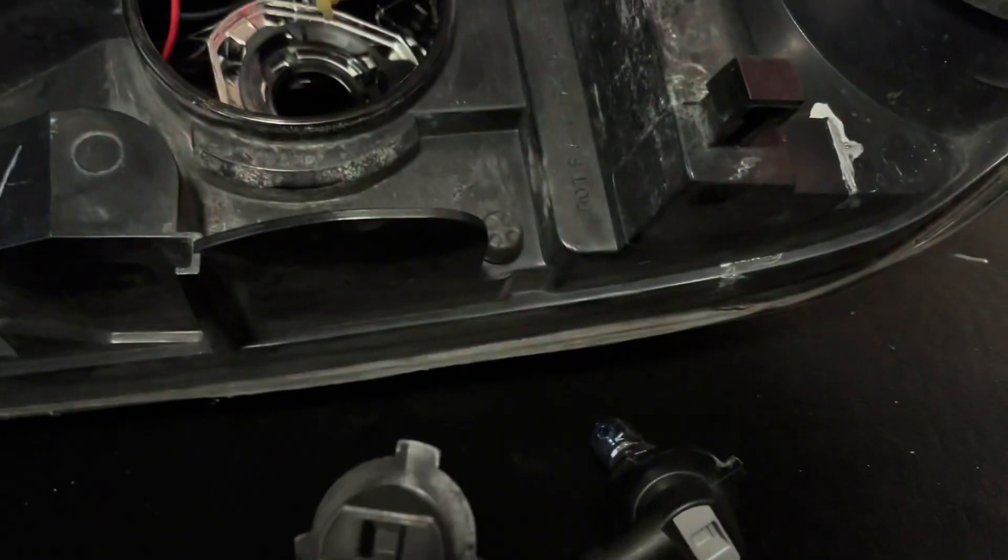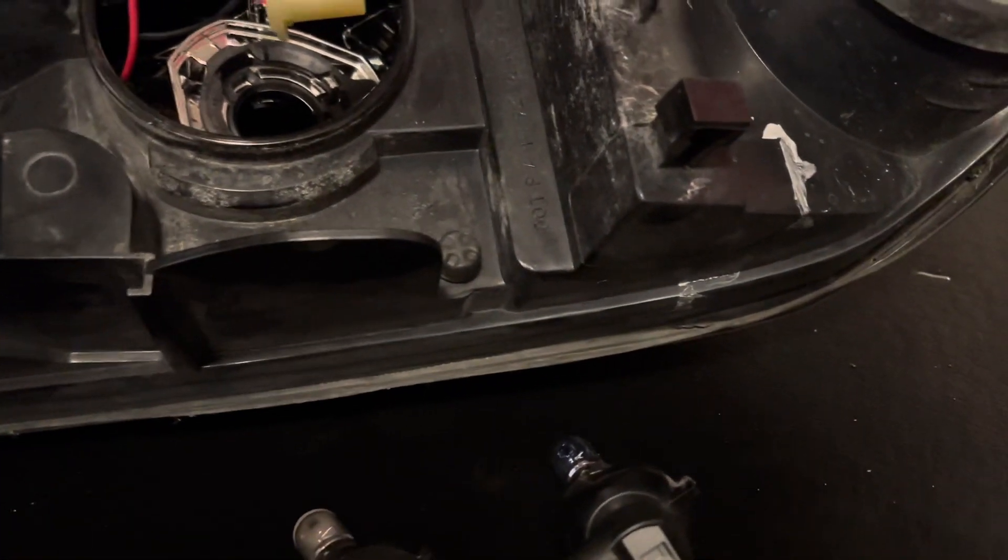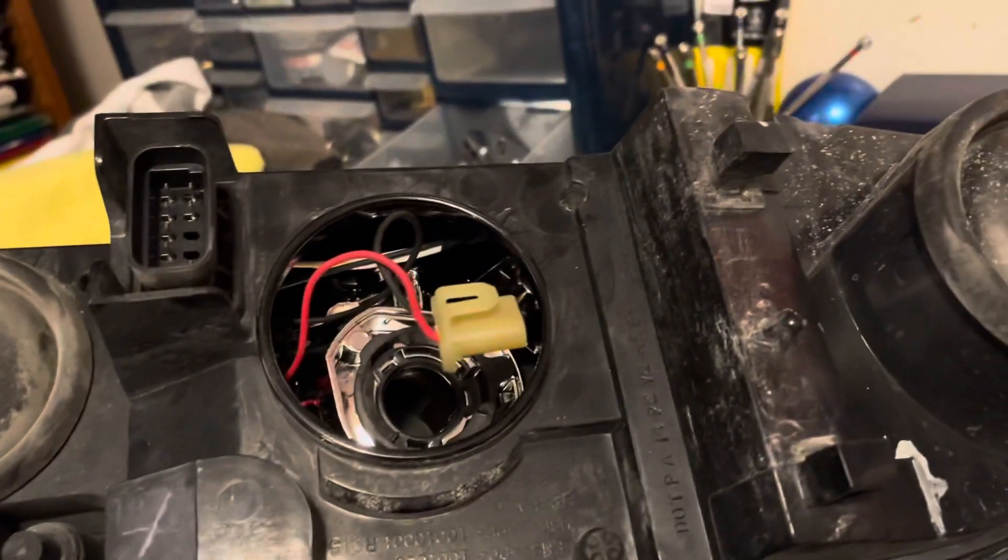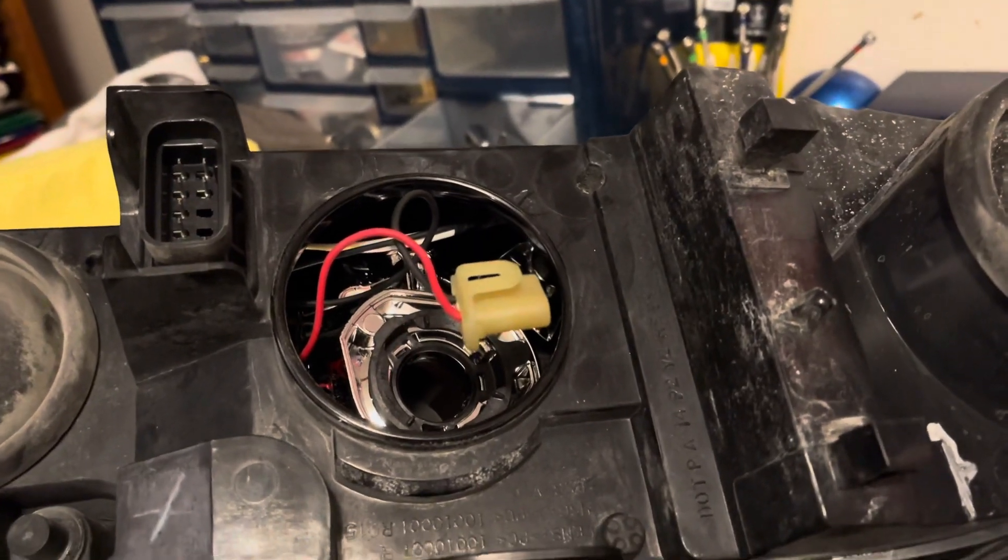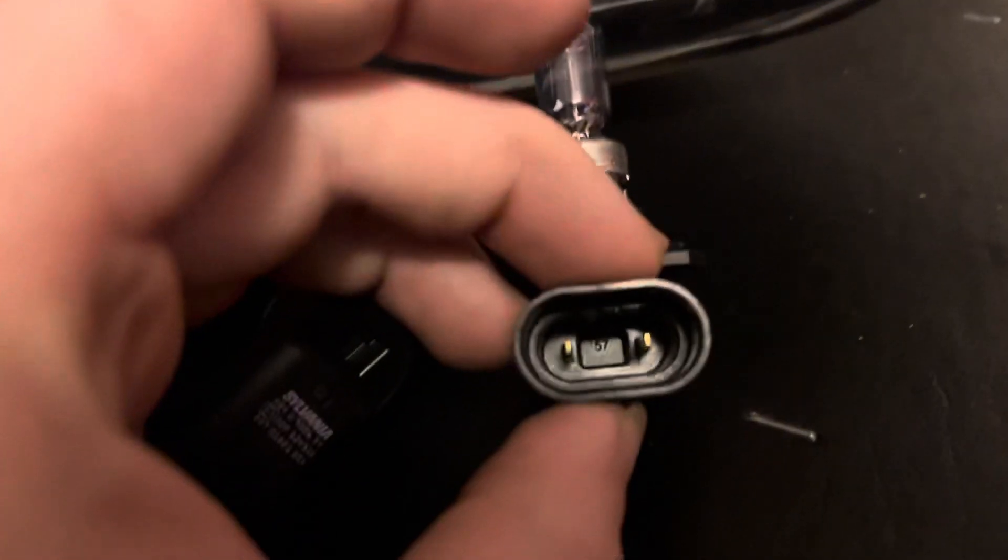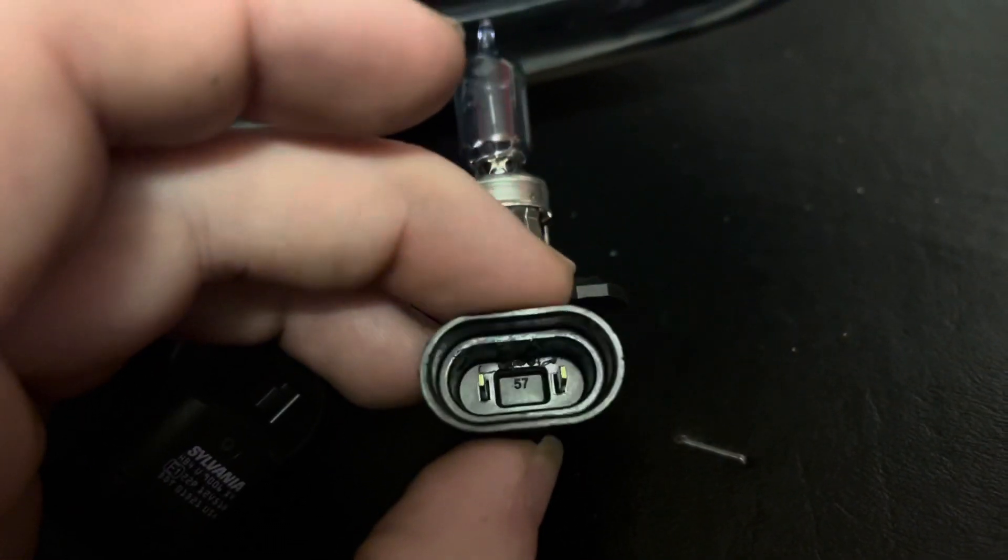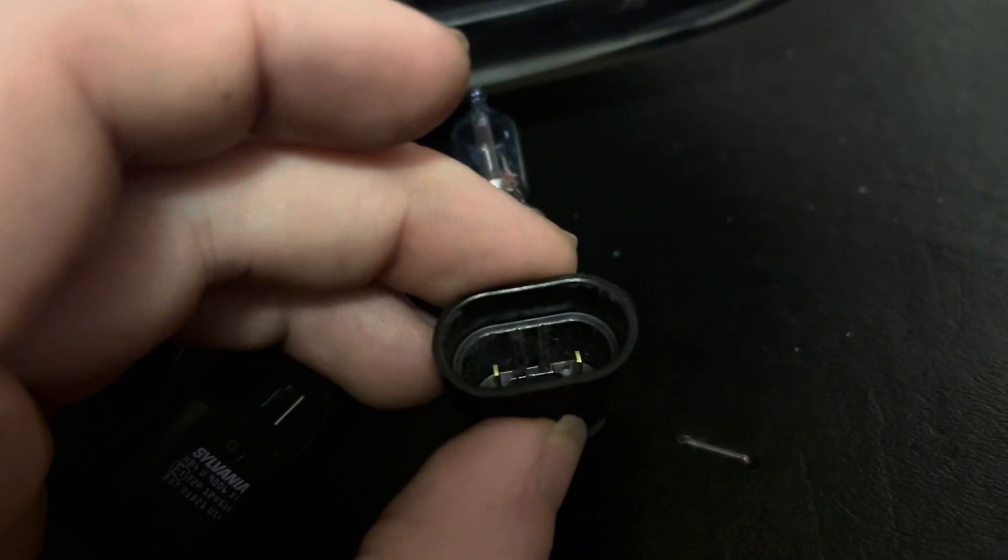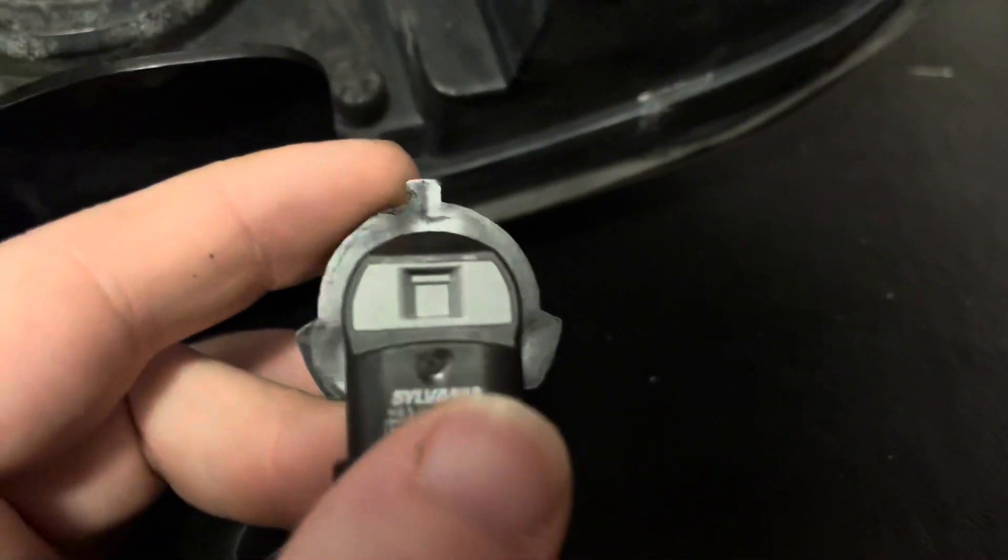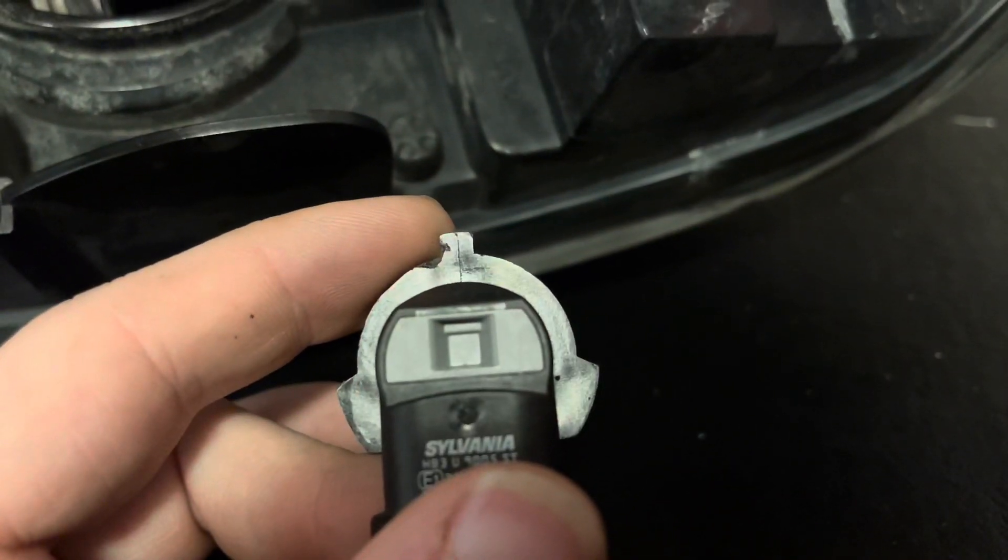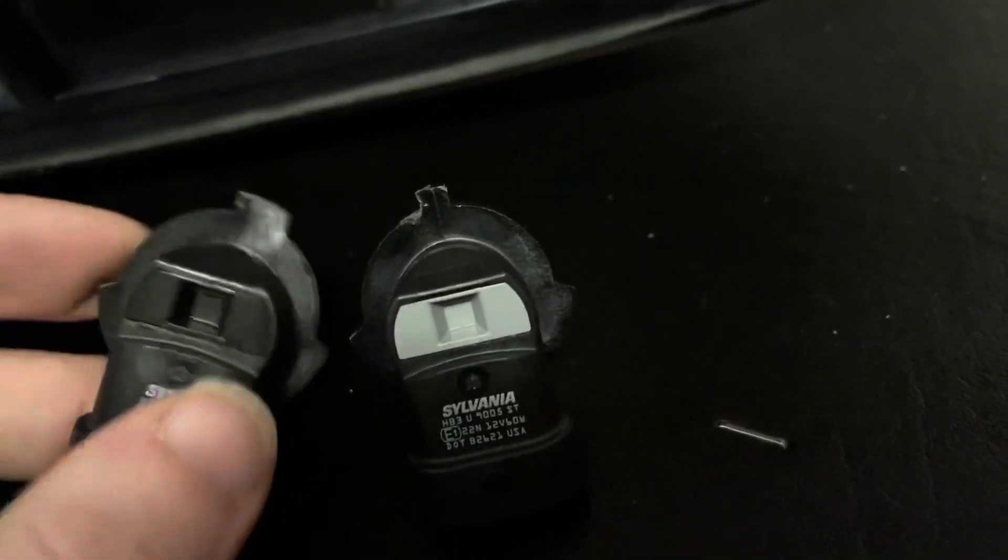So in order to run a high beam 9005 in a 9006 housing, the first thing you have to do is there's two tabs inside that you have to snip off and grind down. And then this little tab here, you cut about half of it off. And then it will look something like that.